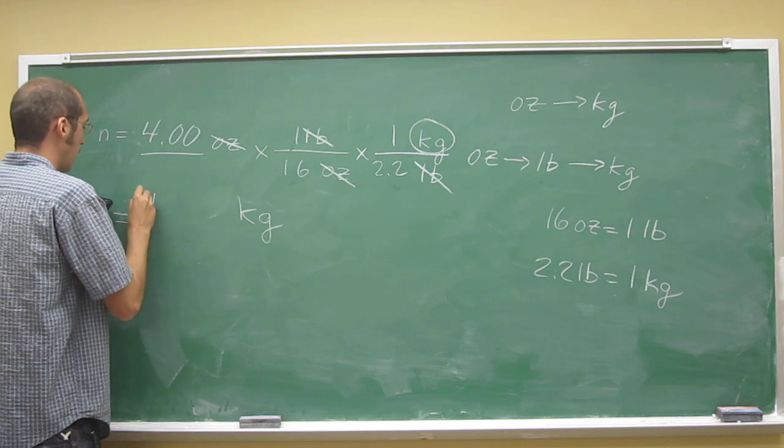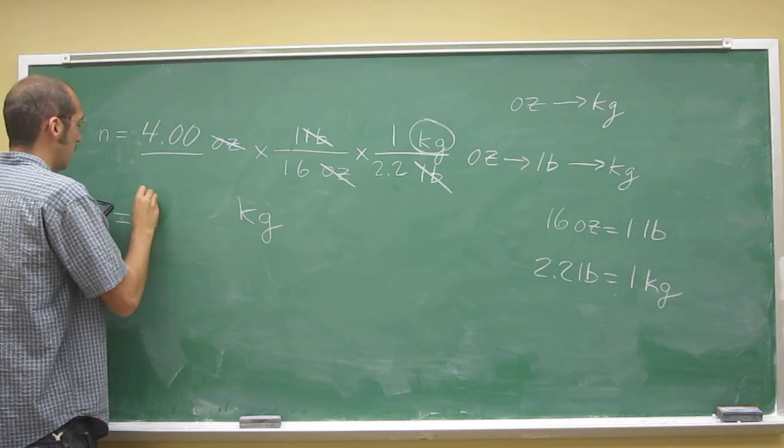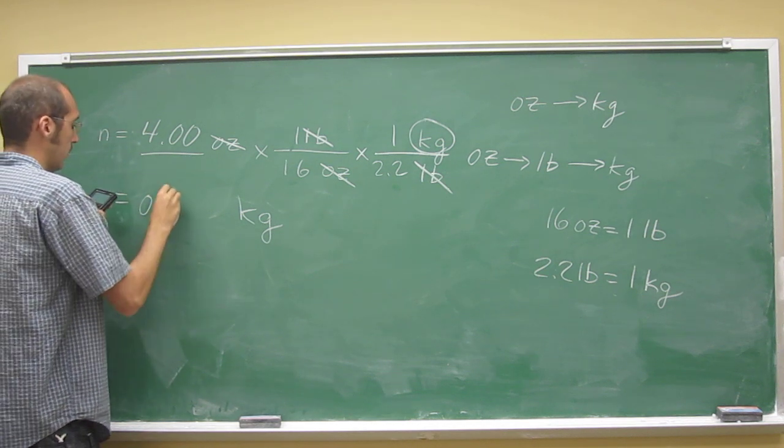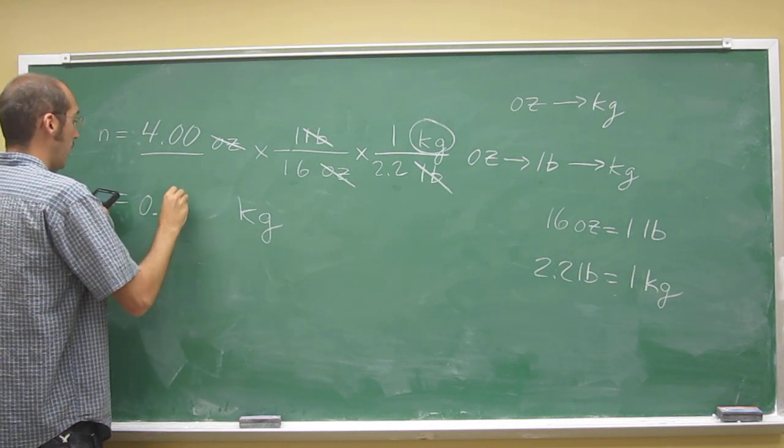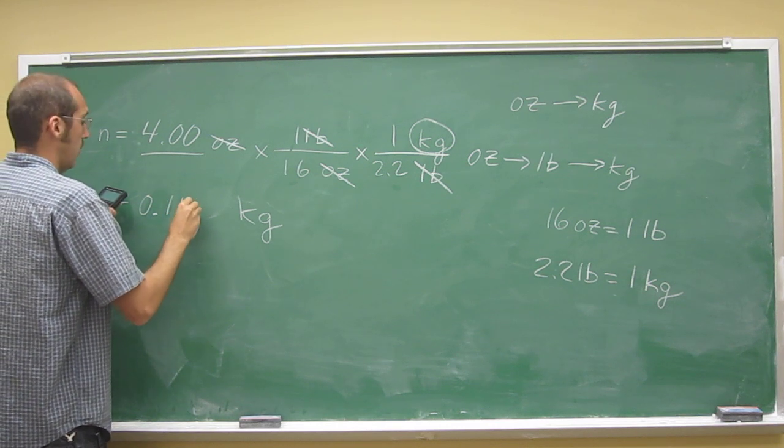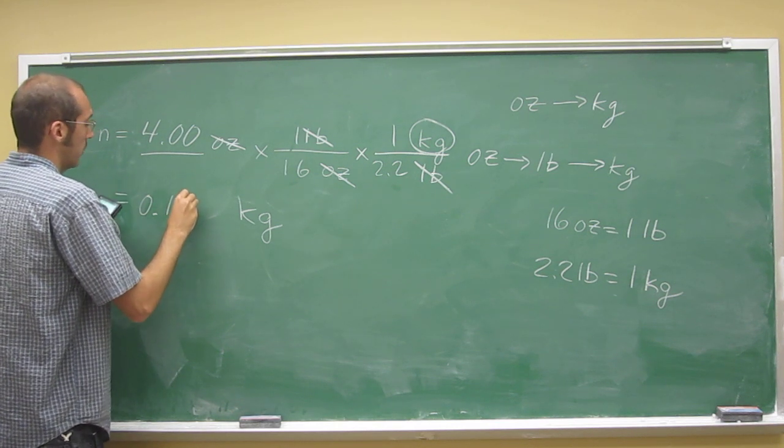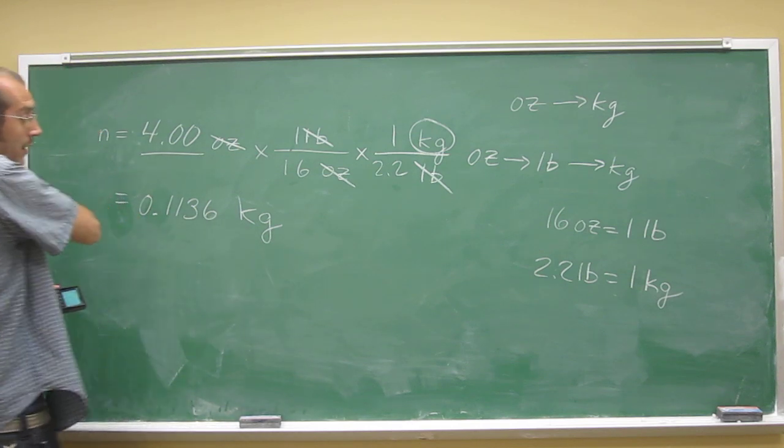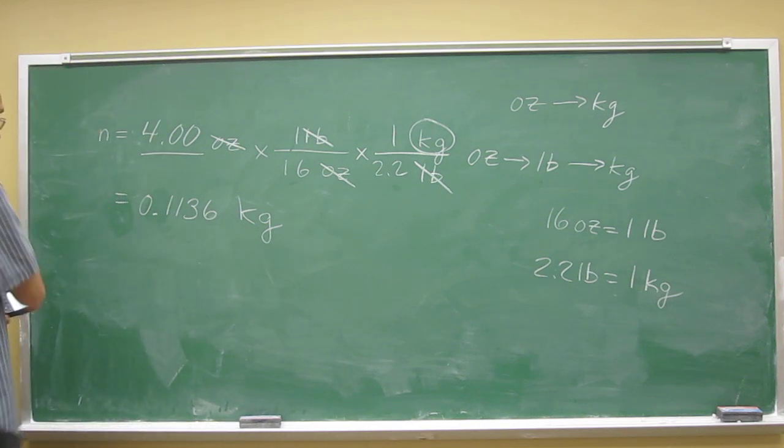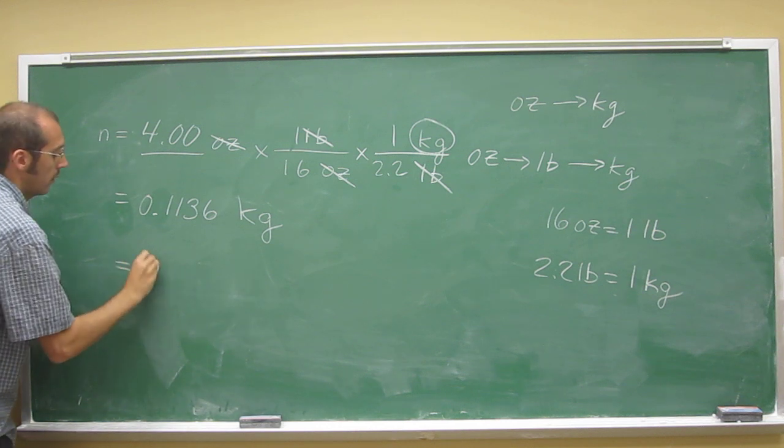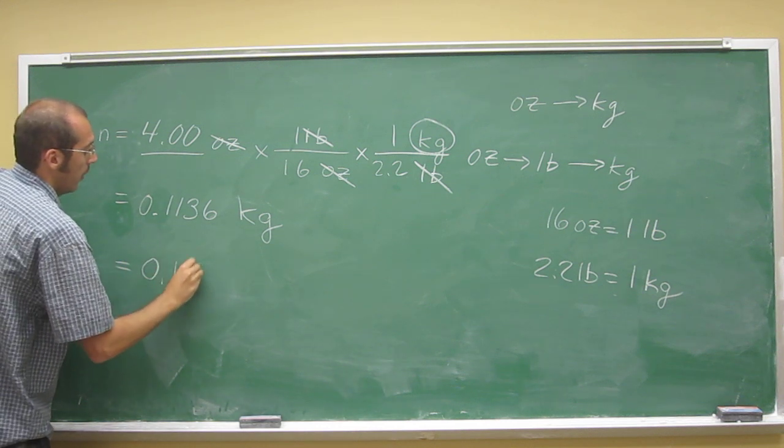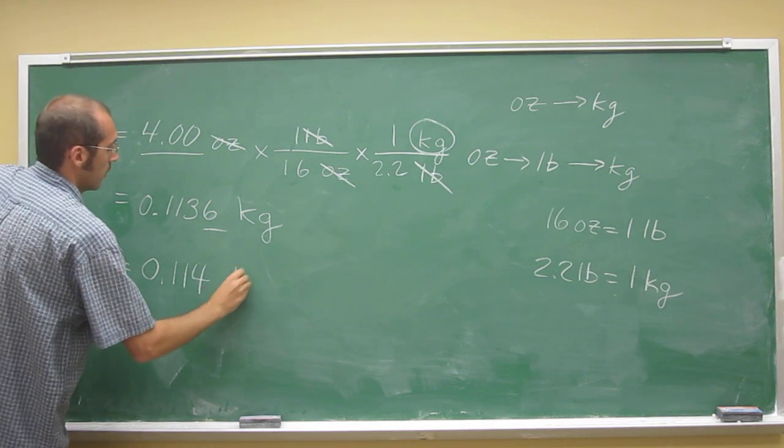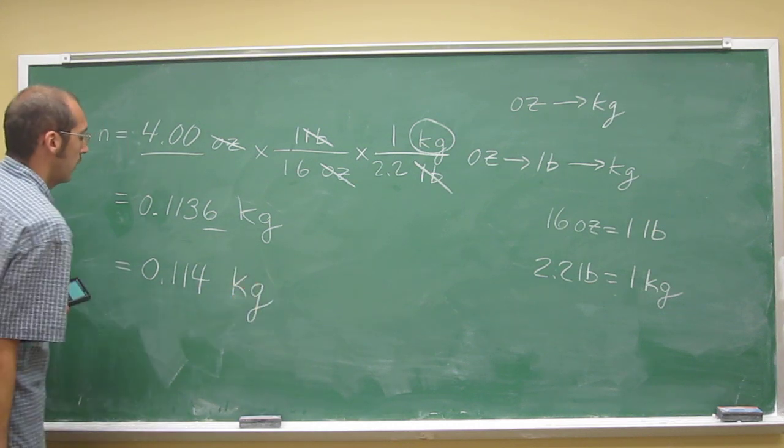And we want to take this to 3 sig figs. So 0 point, I wanted to do it in scientific notation, which we'll do in a second. 1, 1. So we got a, so 1, 1, 3, 6 kilograms. That's not the right significant figures, right? So we've got to round up because 6 is higher than 5. So 0.114 kilograms.